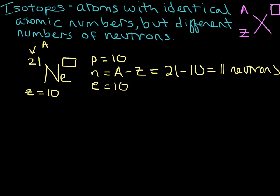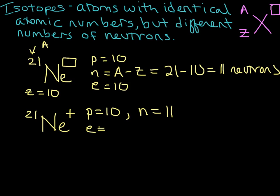Now, what if we decided to make this an ion? What if I had given you neon-21 with a plus 1 charge? What would change? Well, the number of protons — it's still neon, so that would still be 10. The number of neutrons wouldn't change either, because it doesn't matter if it's charged; we still just take the mass number and subtract off the atomic number, so the number of neutrons is still 11. What is going to change is the number of electrons. We started with 10 electrons, took one away, so we have fewer electrons than protons — that gives us a positive charge. So 10 minus 1: we have 9 electrons.